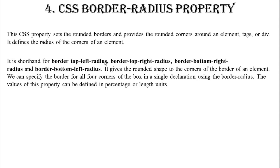Border-radius is shorthand for border-top-left-radius, border-top-right-radius, border-bottom-right-radius, and border-bottom-left-radius. So top-left is this corner, top-right is this corner, bottom-right and bottom-left. If I point to my screen: top-left is where my cursor is, then top-right, bottom-right, and bottom-left. It gives a rounded shape to the corner of the border of an element.